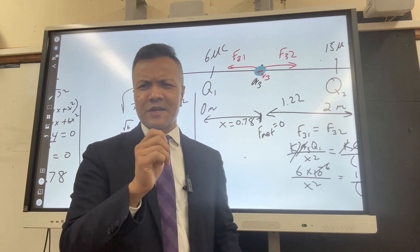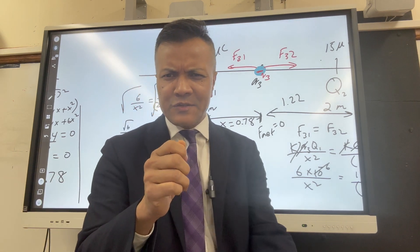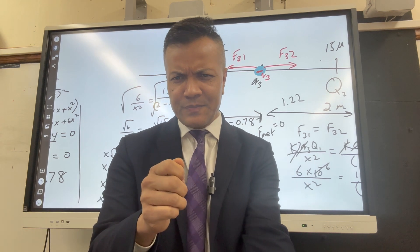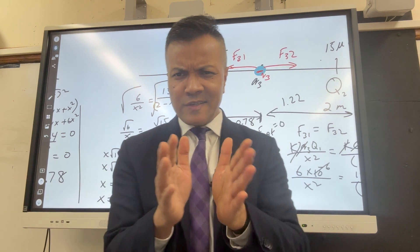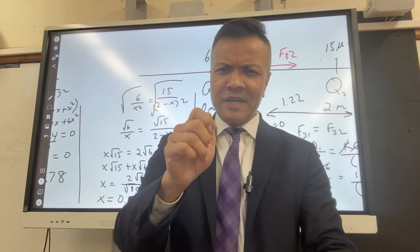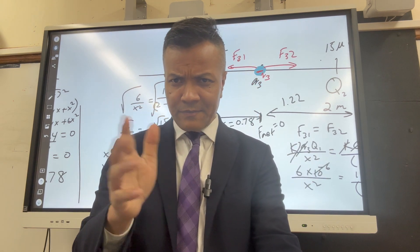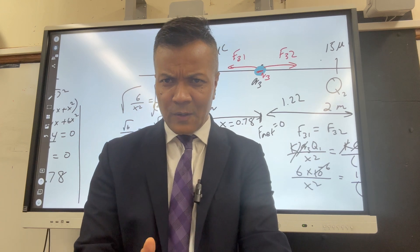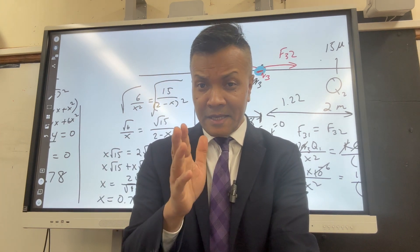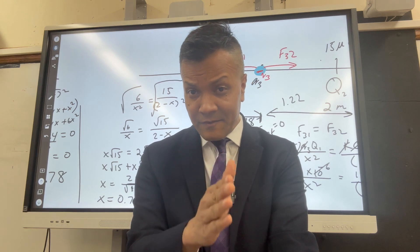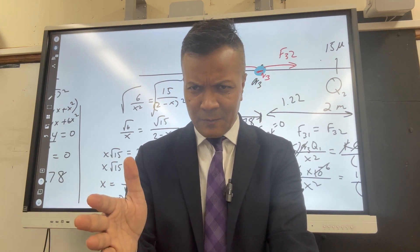There are two types of charges. Charge at rest, we call it static electricity, and charge in motion, we call it electric current. Charge at rest can create only electric field around it, which is defined by Coulomb's law. And charge in motion creates electric field and magnetic field around it, which is defined by MPS law.